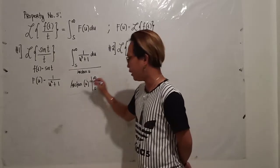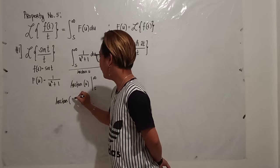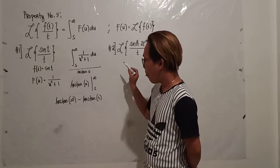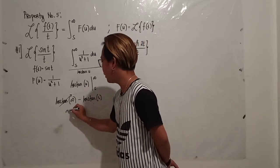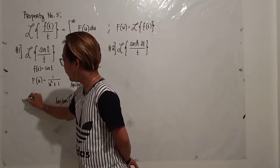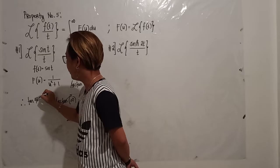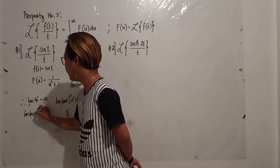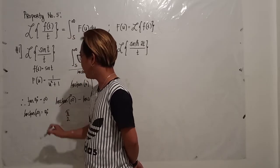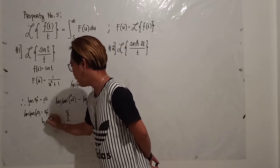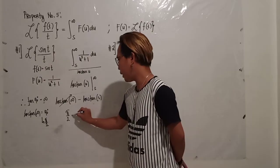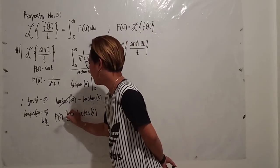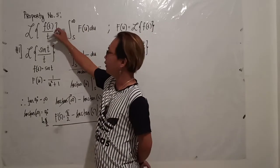So higher limit minus the lower limit, you will have arctan of infinity minus arctan of s. Evaluating this, the arctan of infinity is equivalent to pi over 2, since tangent of 90 degrees equals infinity, and 90 degrees expressed outside the trigonometric function is pi over 2. So this is pi over 2 minus arctan of s. This is your f of s, or the answer — the Laplace transform of sine t over t.